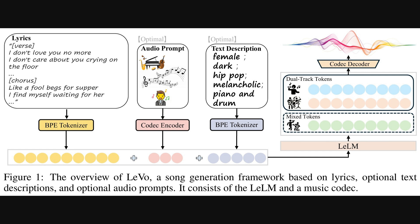The main language model, or Li-LM, then generates two sets of new tokens in parallel: the mix tokens for overall harmony, and the dual-track tokens for high-quality detail. Finally, a codec decoder turns all these generated tokens back into the final audio waveform.